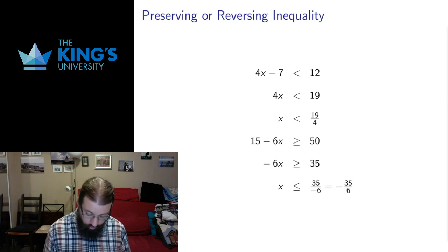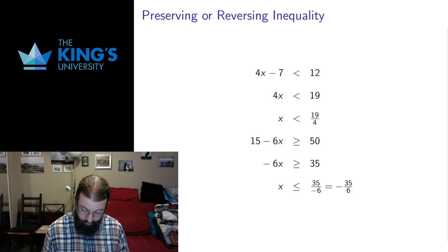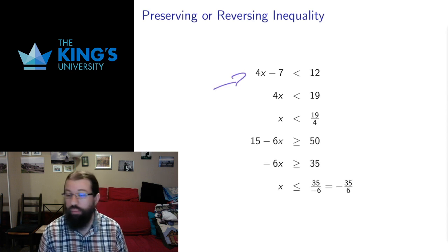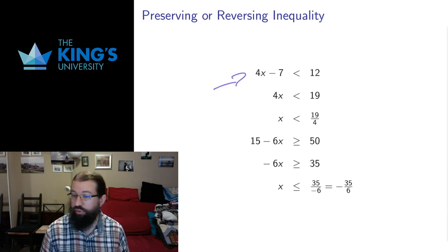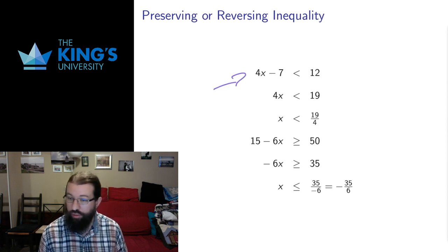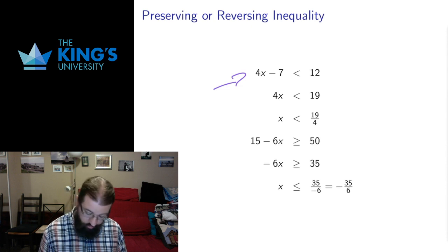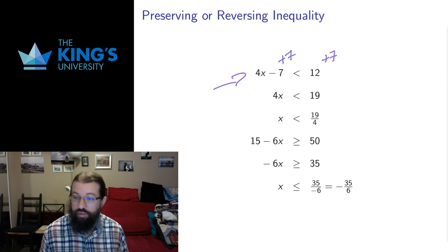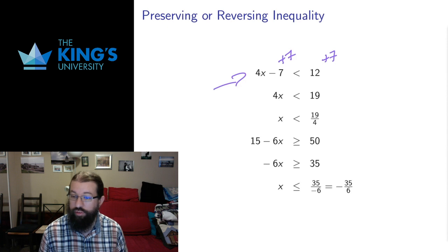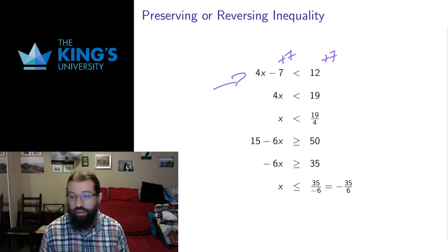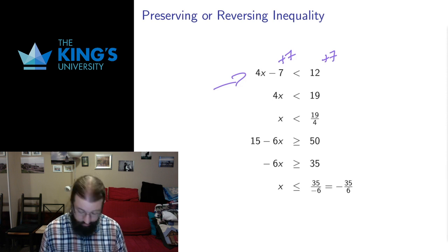So let's start with this first example: what numbers, when I multiply by 4 and subtract 7, are less than 12? I can add 7 to both sides of this inequality. Adding or subtracting any number preserves inequalities, so that's a valid thing that I can do.